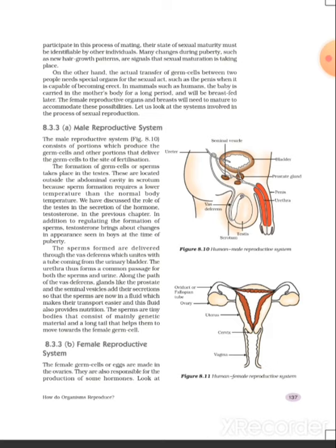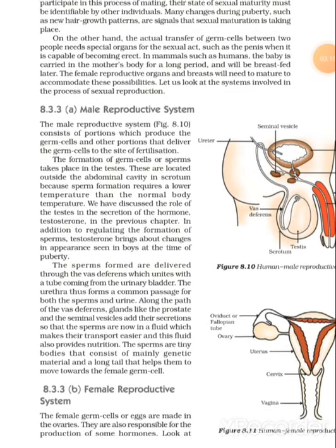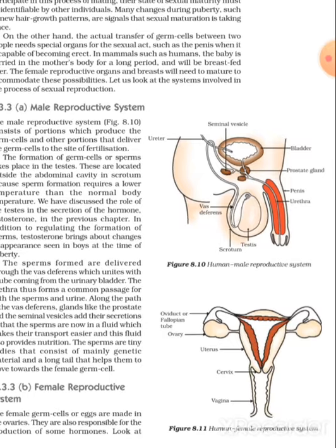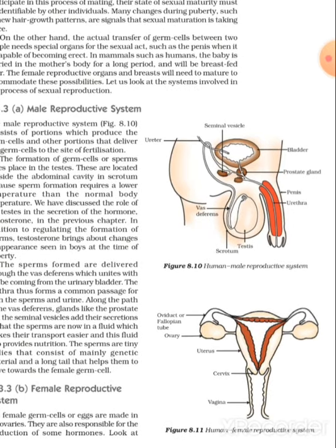So this is called sexual reproduction. I hope you have understood. Now let's discuss the male reproductive system in detail. There is a scrotum where the germ cells of the males — that is, sperms — are produced and stored in the testes, and then they reach the penis, from where urine and sperm are released.